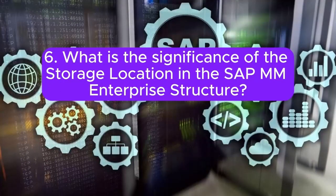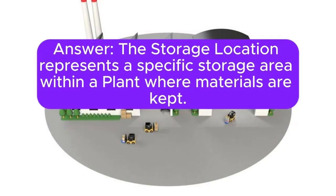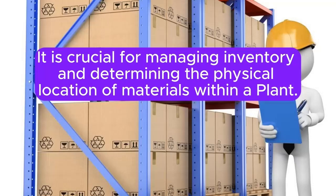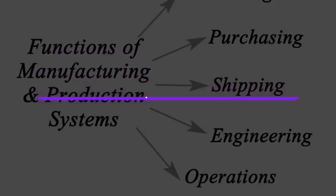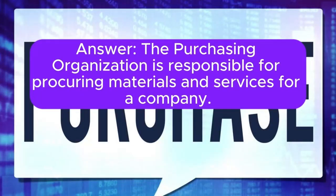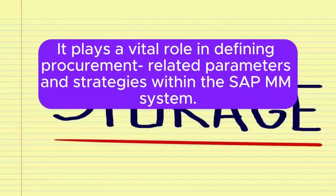Question 6: What is the significance of the storage location in the SAP MM Enterprise Structure? The storage location represents a specific storage area within a plant where materials are kept. It is crucial for managing inventory and determining the physical location of materials within a plant. Question 7: How does the purchasing organization contribute to the SAP MM Enterprise Structure? The purchasing organization is responsible for procuring materials and services for a company. It plays a vital role in defining procurement-related parameters and strategies within the SAP MM system.